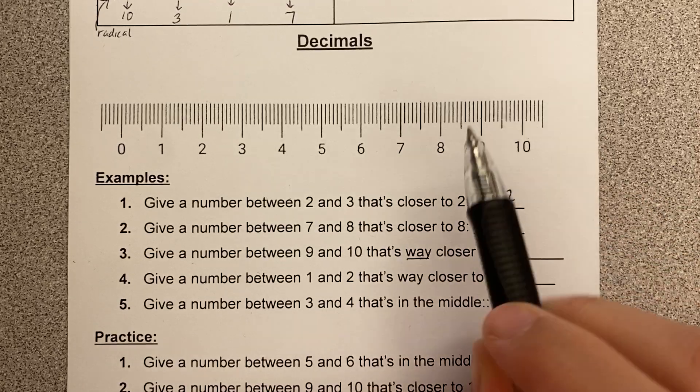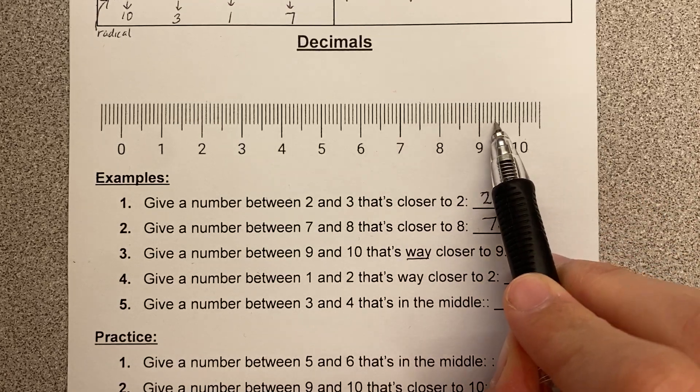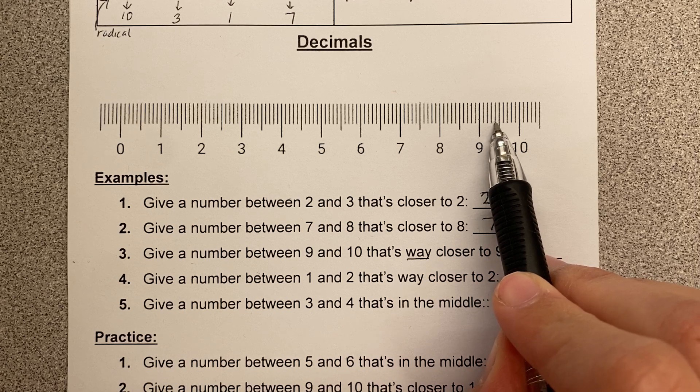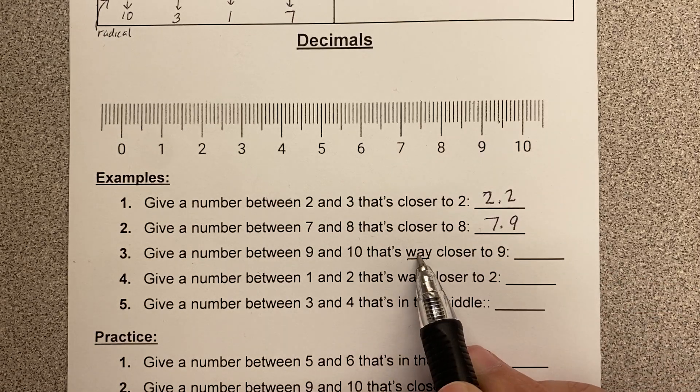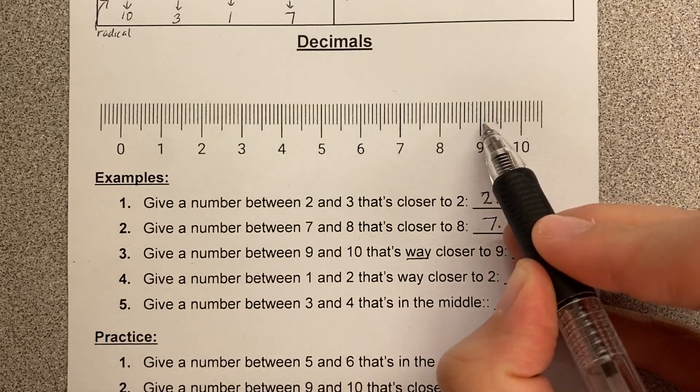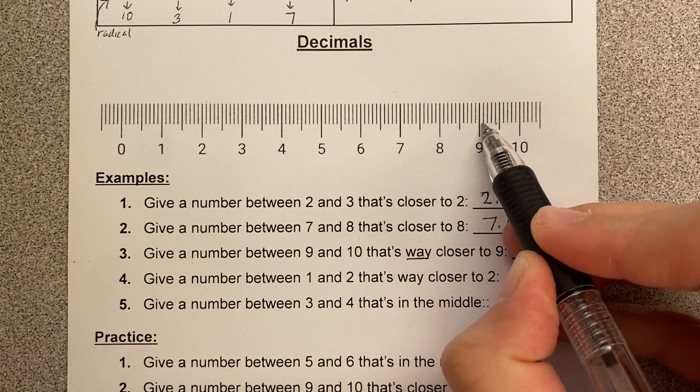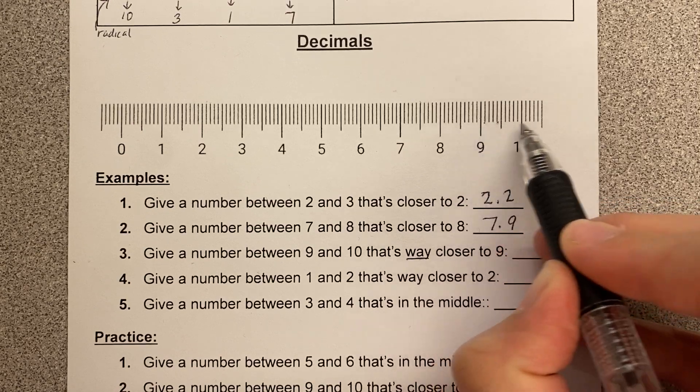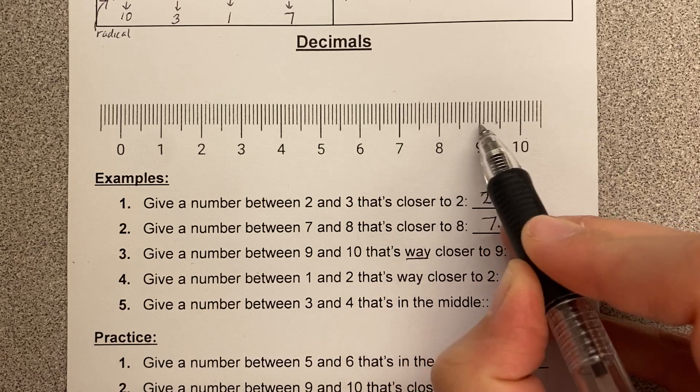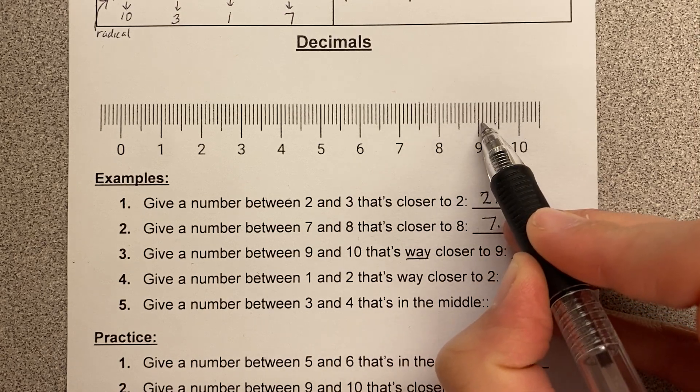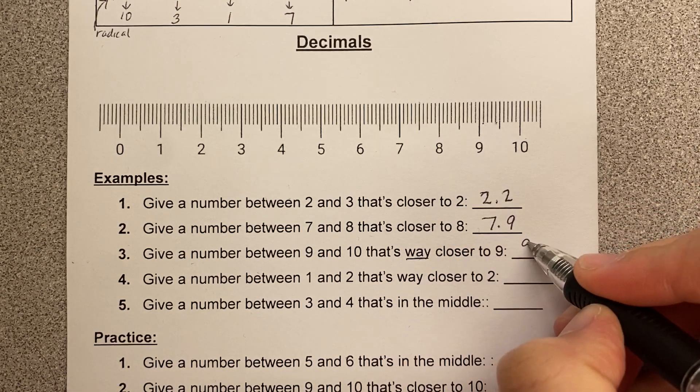Give a number between 9 and 10 that's way closer to 9. So here's between 9 and 10. Now look, like technically 9.4 is in between 9 and 10 and it's closer to 9, but this says way closer to 9. So let's pick a number that's right next to 9. What number is this? It's in between 9 and 10, not over here, not close to 9 in between 8 and 9. In between 9 and 10, but it's way closer to 9, that would be 9.1.